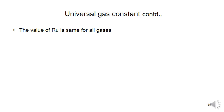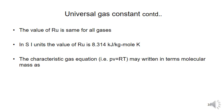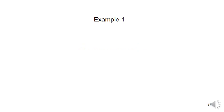The universal gas constant Ru is the same for all gases, unlike the characteristic gas constant R which differs for different gases. In SI units, the value of Ru = 8.314 kJ/(kg·mol·K). The characteristic gas equation in terms of moles is PV = nMRT, where n is the number of moles and M is the molecular weight.